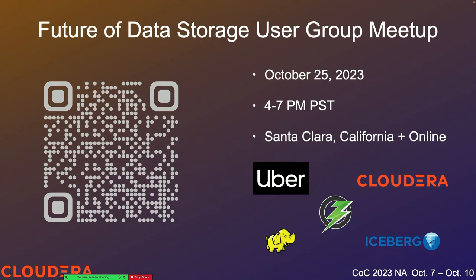We have a Storage Group meetup happening on October 25th at Cloudera's Santa Clara office, with an online version as well. There are talks from Uber and Cloudera on several Apache projects in the storage space. You can scan the QR code for more information. That's the end of the talk and it looks like we have time for questions.